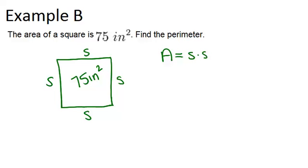So the area equals S times S. And the area is 75, so we know that 75 equals S times S, which means 75 equals S squared.